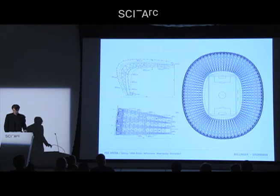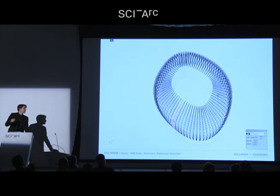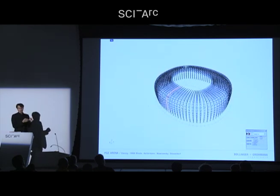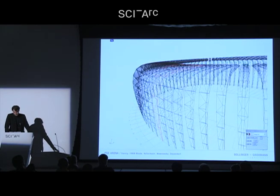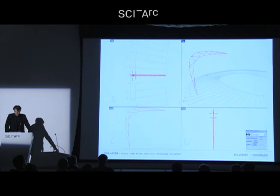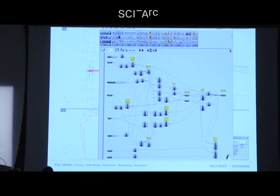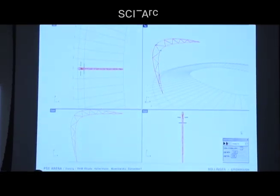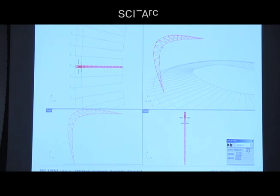So therefore, we started to make this whole thing parametric and really make it changeable so the whole structure can be arranged so it fits optimal to our needs. Here you see all of them copied around the circle. And then we made it that it can be smaller, bigger. Here you see the grasshopper file to it.